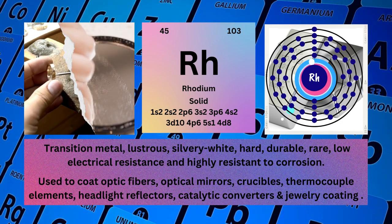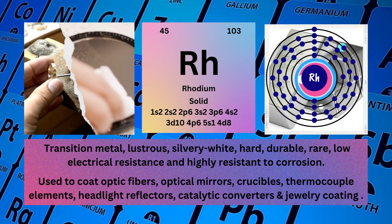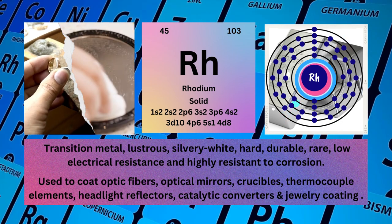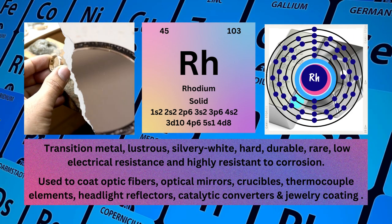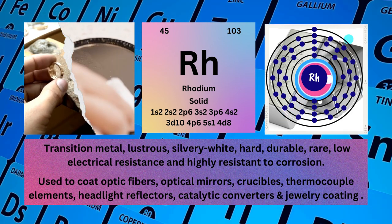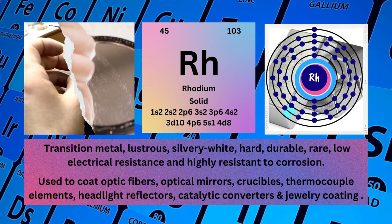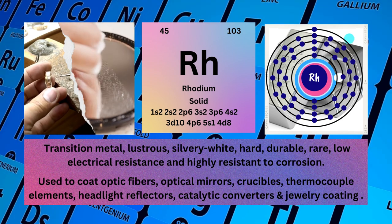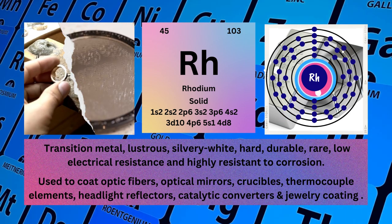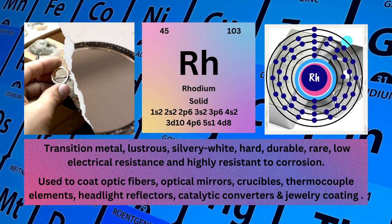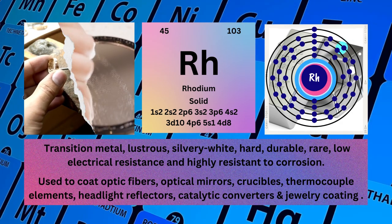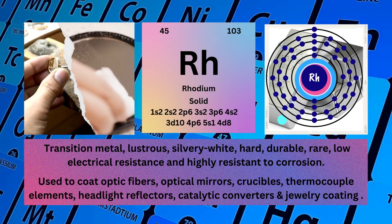Physical properties: transition metal, lustrous, silvery white, hard, durable, rare, low electrical resistance, and highly resistant to corrosion. Rhodium is used to coat optic fibers, optical mirrors, crucibles, thermocouple elements, headlight reflectors, catalytic converters, and jewelry coating.